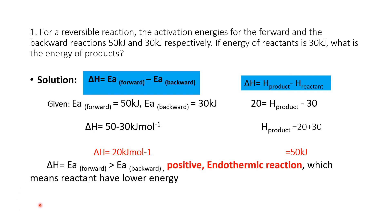Also note the type of reaction: the forward Ea (50 kJ) is higher than the backward, so ΔH is positive — it is an endothermic reaction. If the forward Ea is more, you will get a positive value, meaning endothermic. If the backward were more, you would get a negative value, meaning exothermic. In an endothermic reaction, the reactants have lower energy compared to the products.